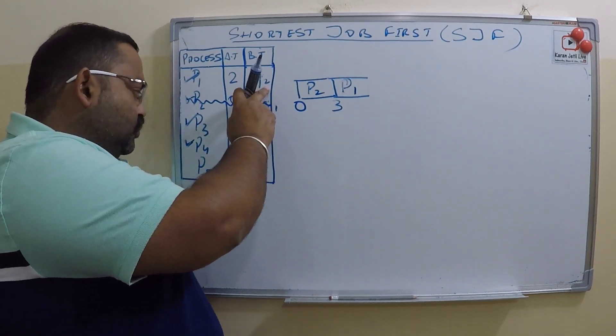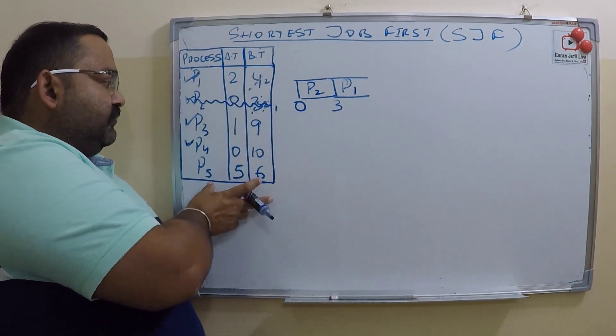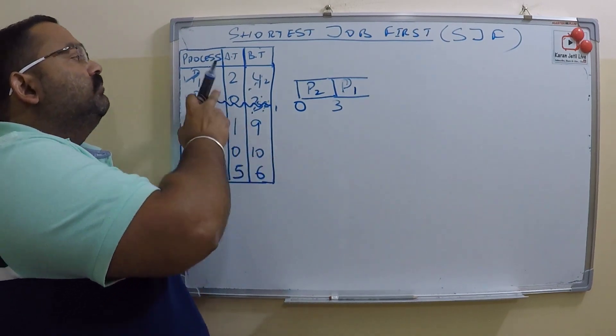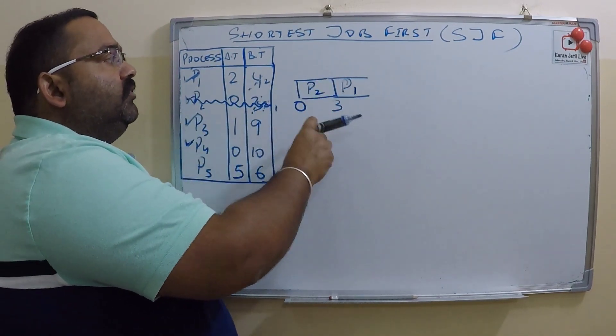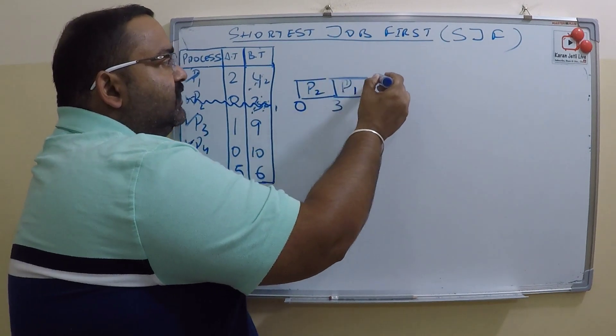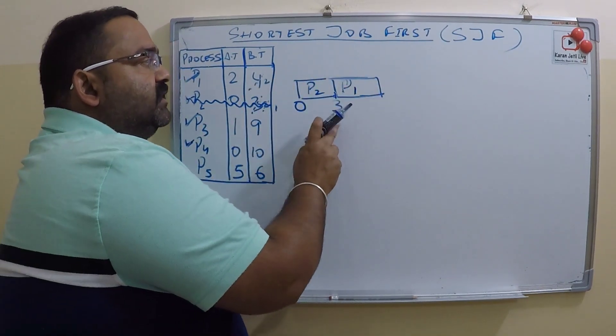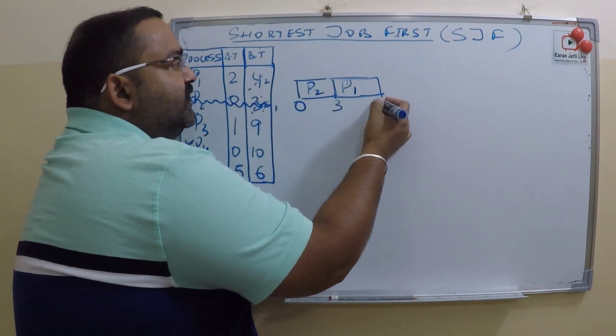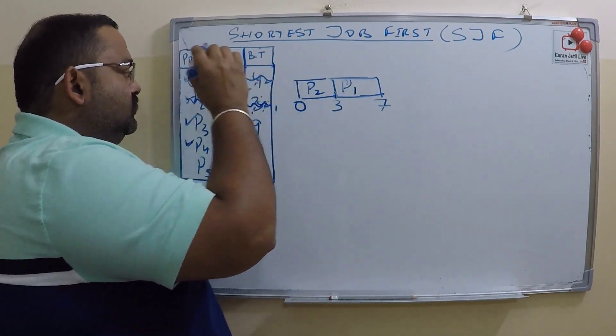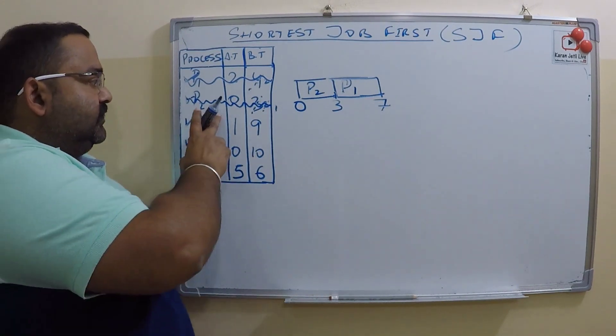Which is smaller? P1 is smaller, so it will continue with P1 and it will finish P1. P1 starts at three and finishes at seven. Now P1 also gone. Now we have three processes left.